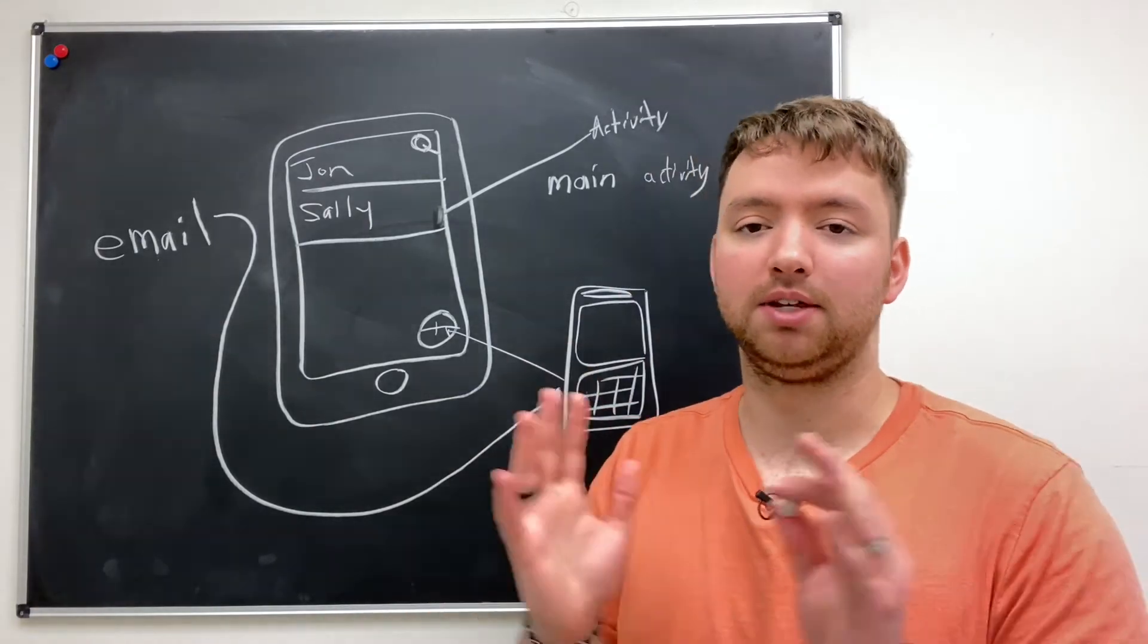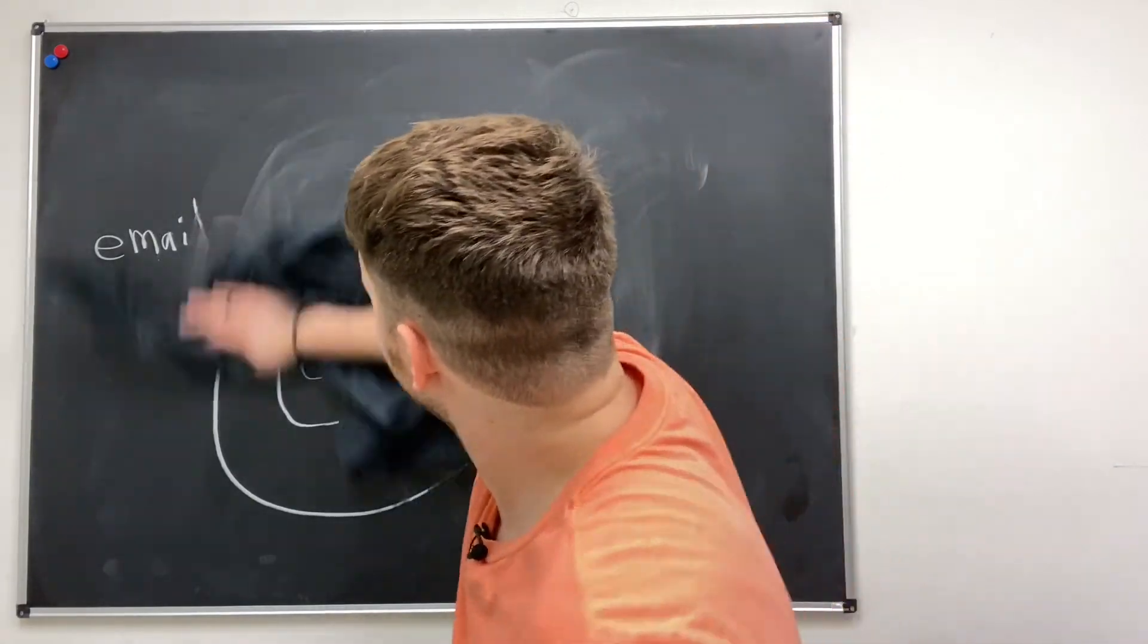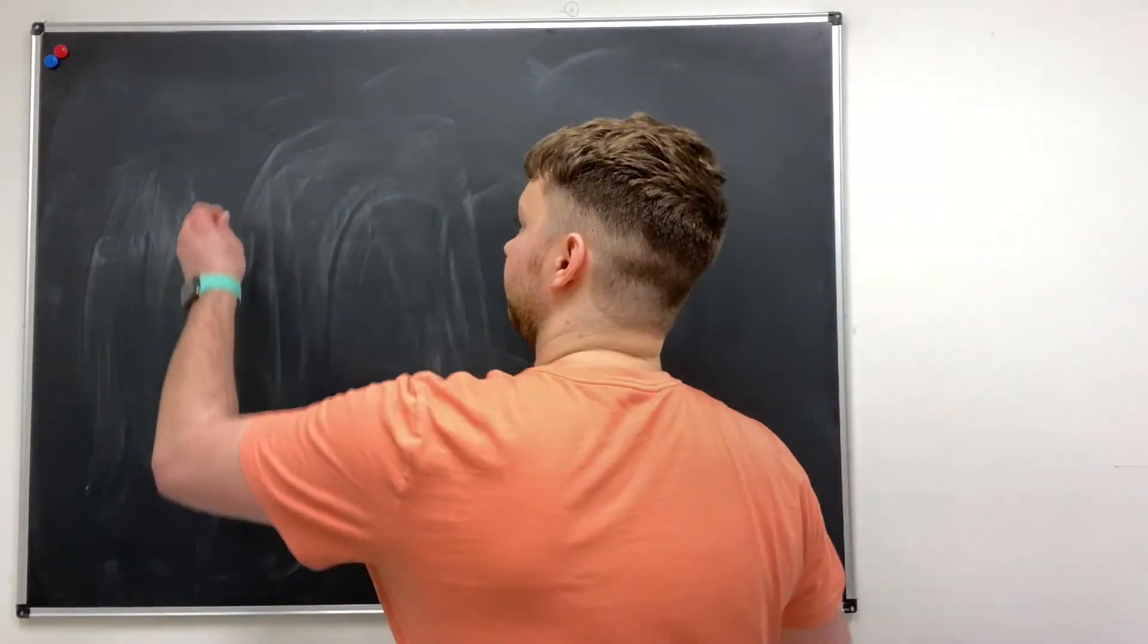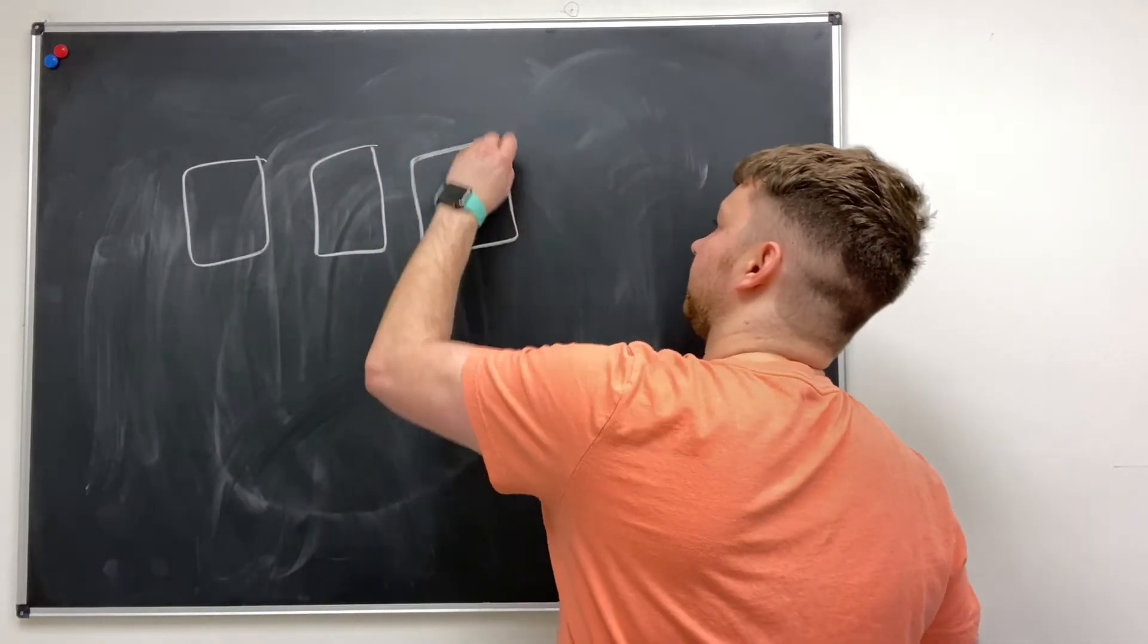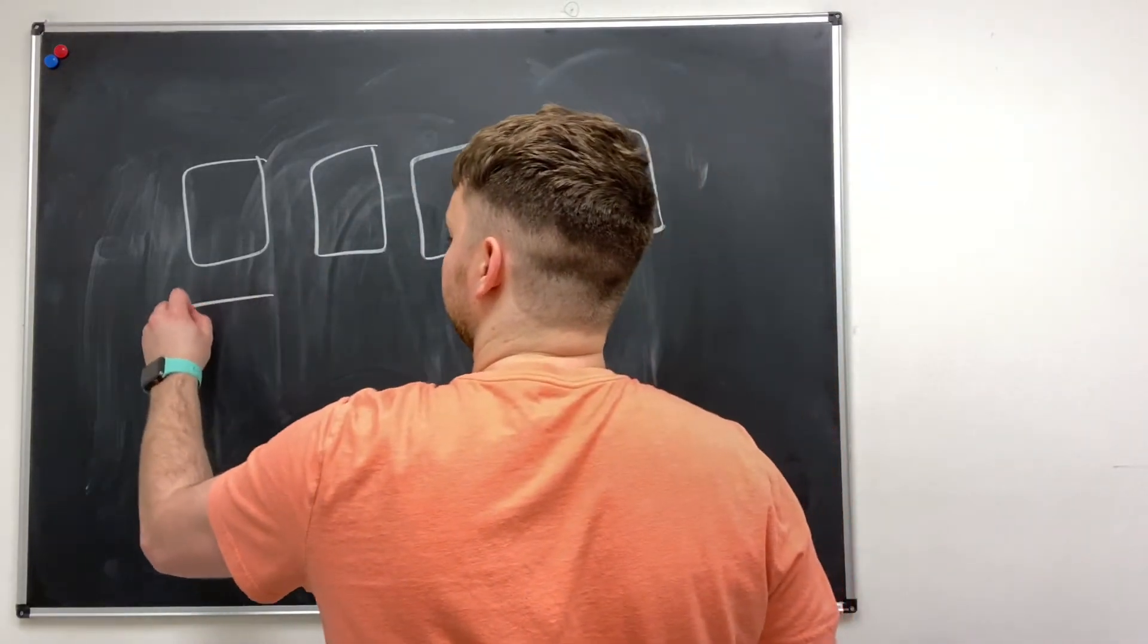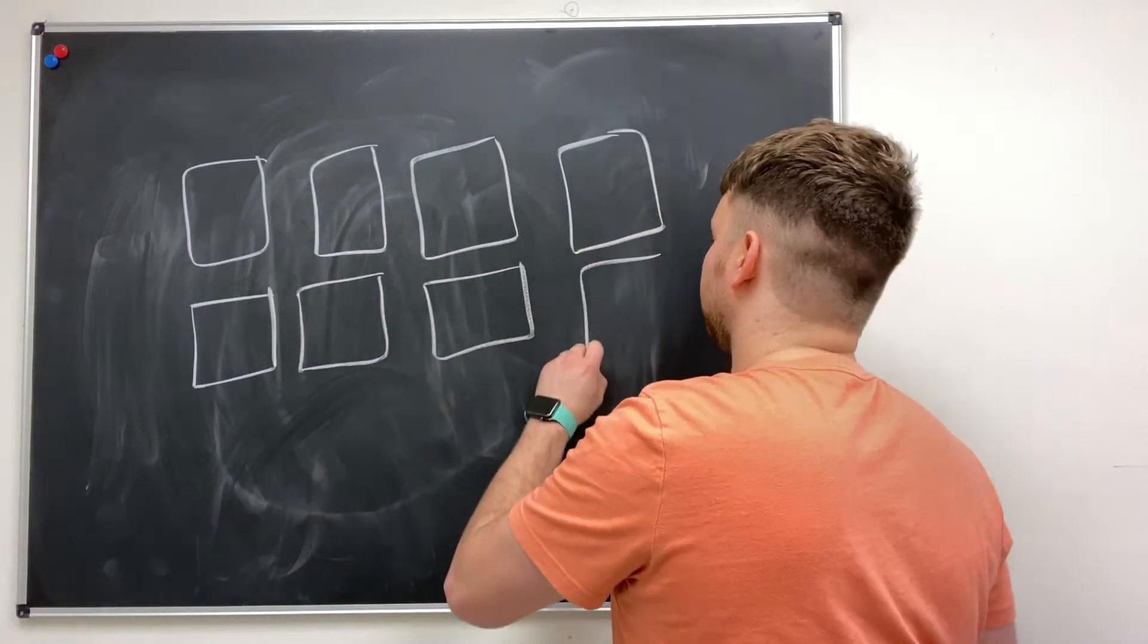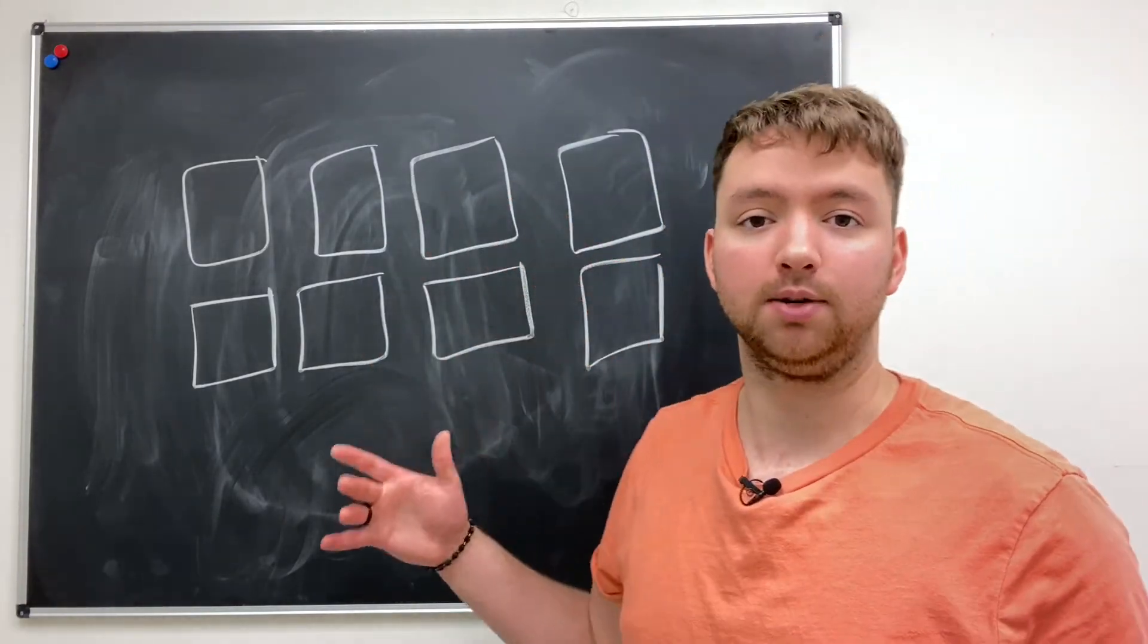So it might look like something like this. We can think about every possibility of different screen as an activity. So we have the home page, we have a compose email, we have a settings, we have account details, we have, I don't know I'm out of ideas. Anyways, we have a bunch of different pages and in theory you should be able to open to any one of these pages directly without having to go through any of the others.